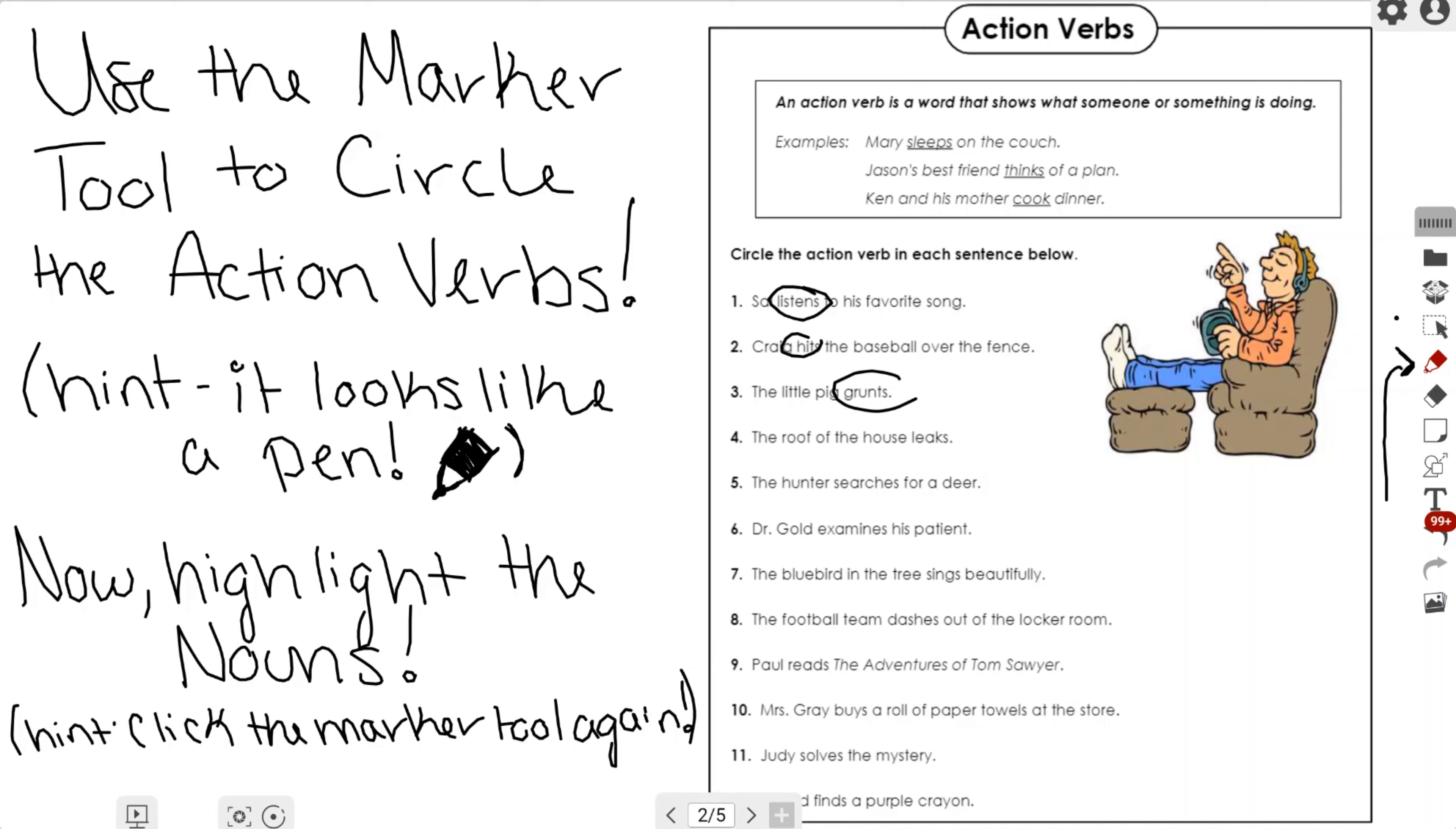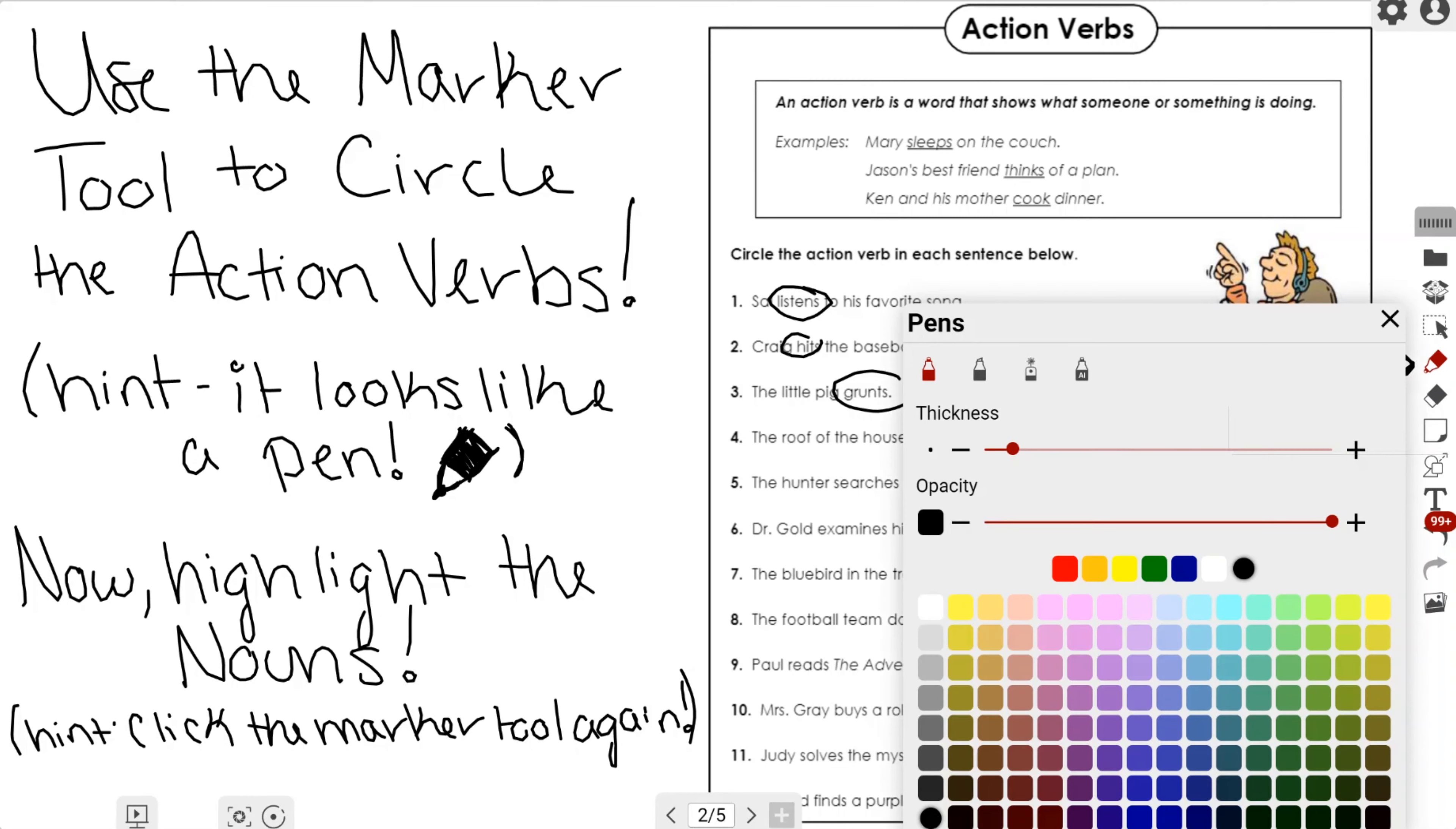I'm circling all the different action verbs along the way. Now we're going to go ahead and take a look at the second prompt, which is now highlight the nouns. Hit click the marker tool again, so I'm going to go ahead and go back to that pen tool and hit it one more time.